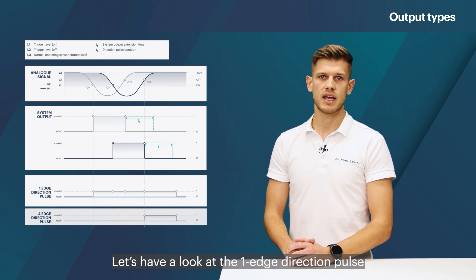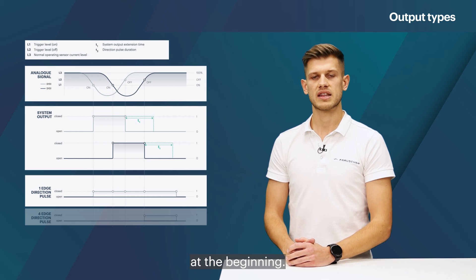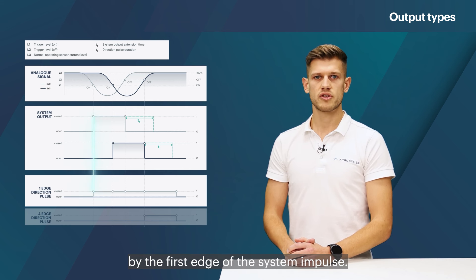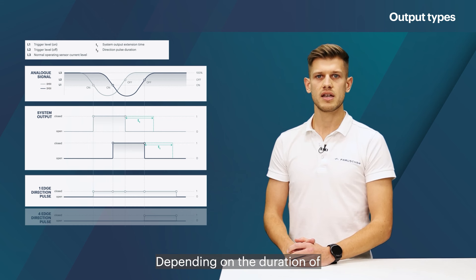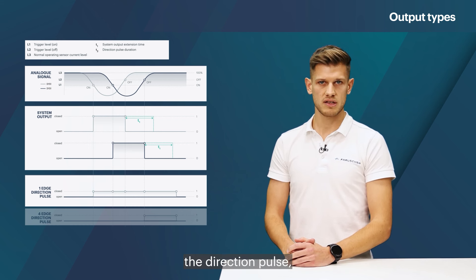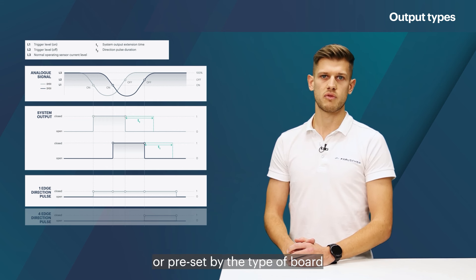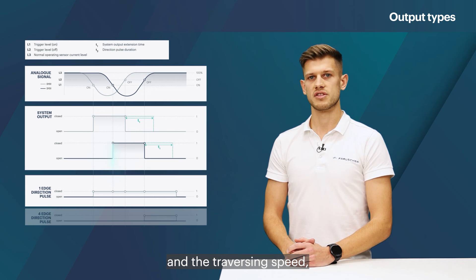Let's have a look at the one edge direction pulse at the beginning. Initially, this output is triggered by the first edge of the system impulse. Depending on the duration of the direction pulse, which is again either configurable or preset by the type of board, and the traversing speed,